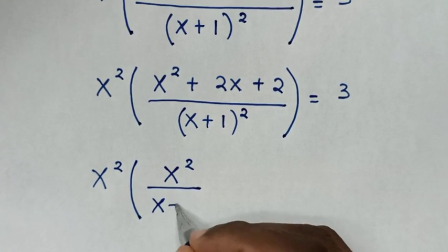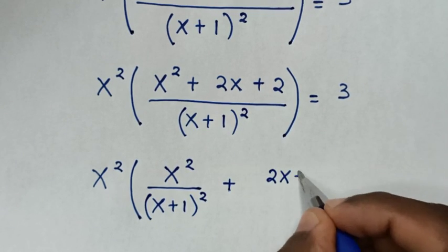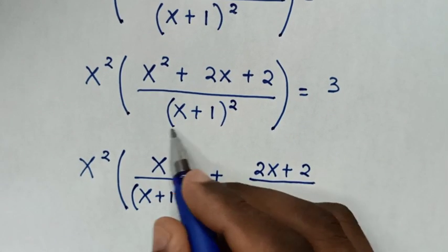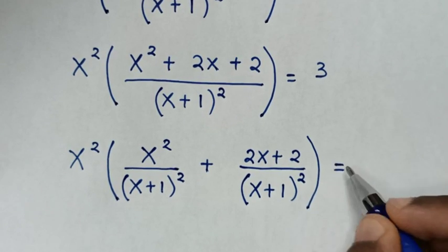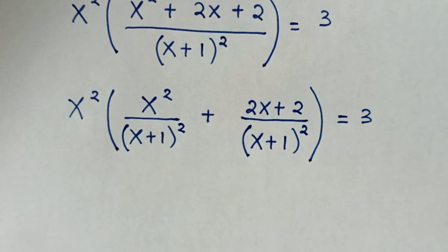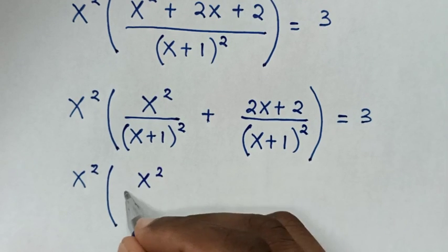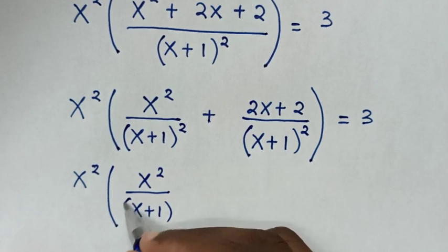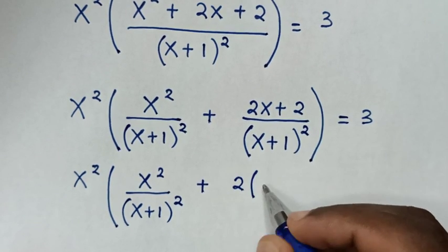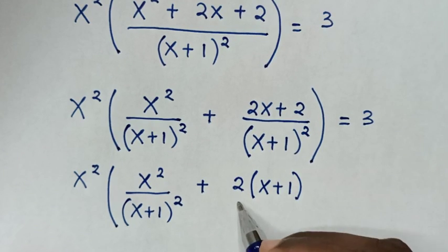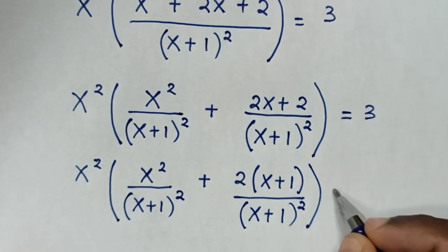Our equation will be x squared, bracket: x squared plus 2x plus 2 over (x plus 1) squared, bracket is equal to 3. Then 2 is common, so we take 2 out of bracket, then x plus 1 bracket over (x plus 1) squared, bracket is equal to 3.